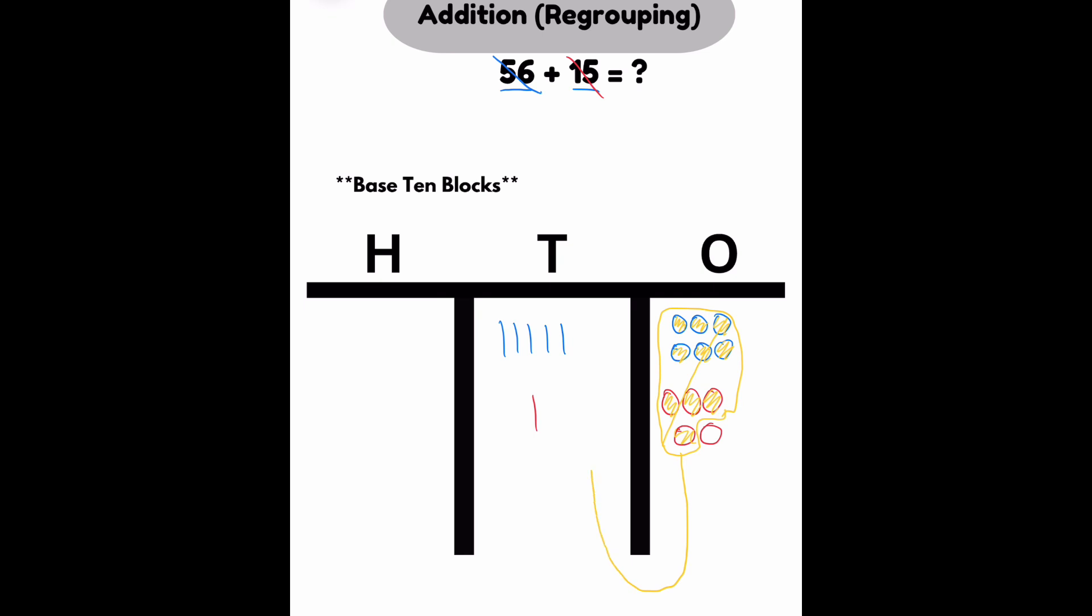I'm going to regroup those into the 10s place. So I didn't take them away. I regrouped them. Taking away means that they're gone forever. Regrouping means we're just moving them into the next place value. So once I count all of those, I know that I had 5 on top. 1, 2, 3, 4, 5, 6. And then the new one makes 7. So I have 7 tens and 1 one.